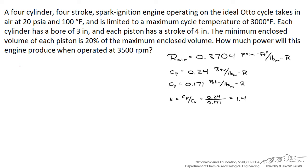Let's assume that it's operating on an ideal Otto cycle. It's taking in air at 20 psi and 100 degrees Fahrenheit, and it's limited to a maximum cycle temperature of 3000 degrees Fahrenheit. So this might be the flame temperature, for example, when the gasoline burns in the cylinder.